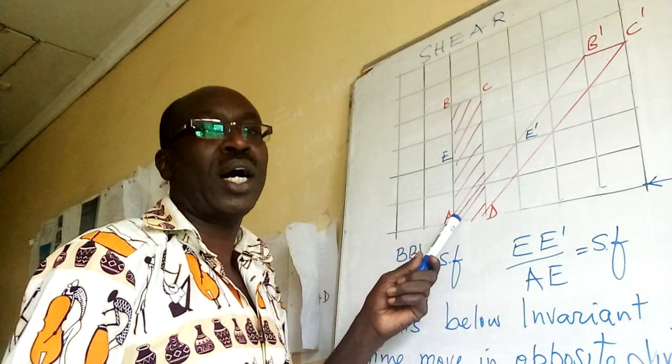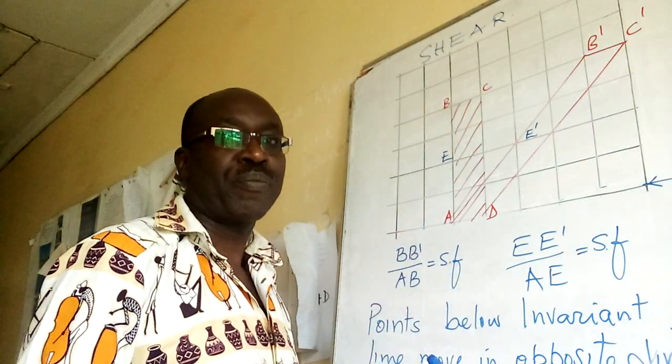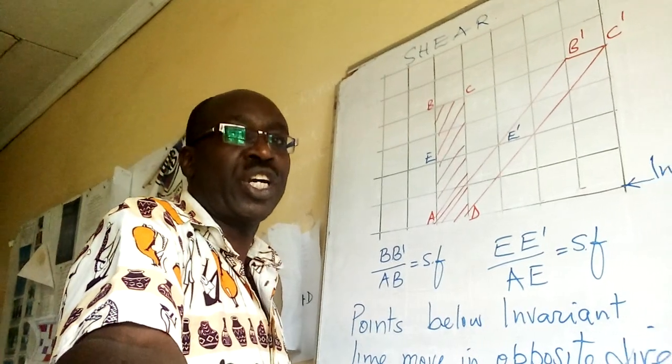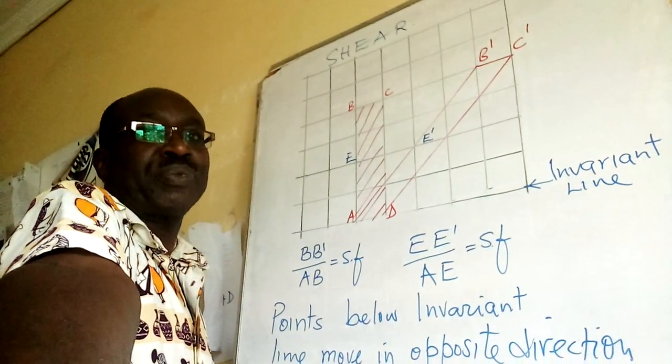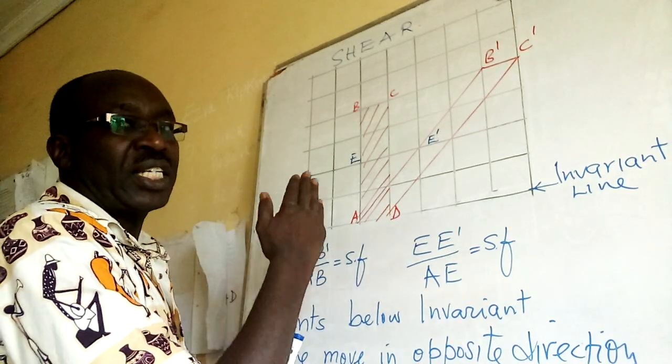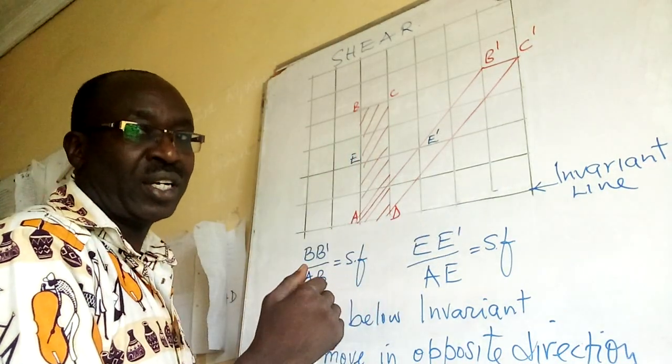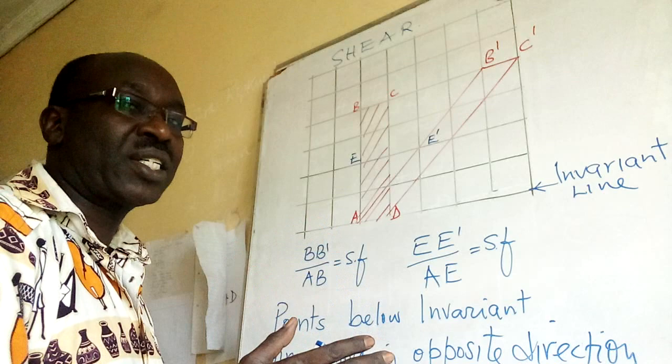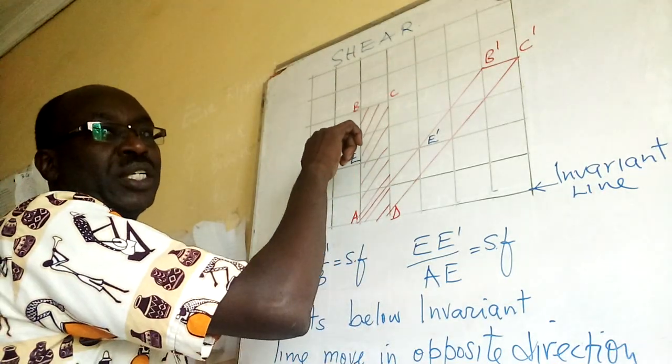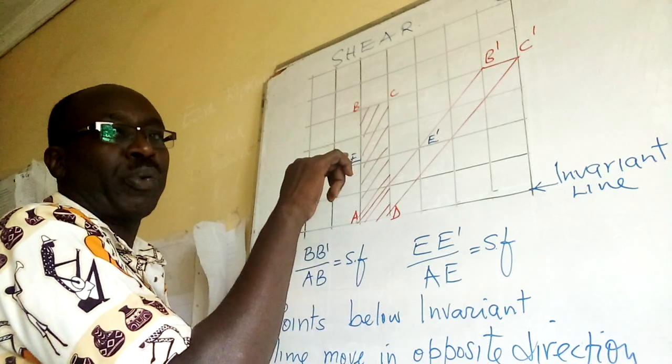If this figure undergoes shear, what does it mean? It just leans on one side. Now the point moves proportionately.